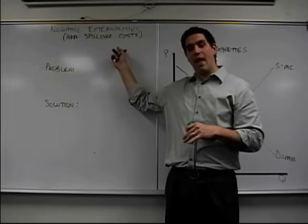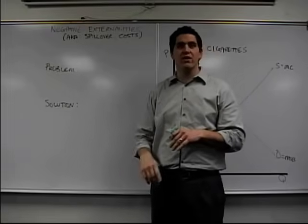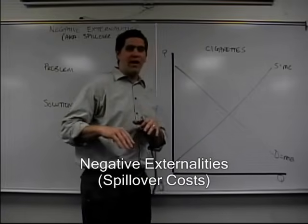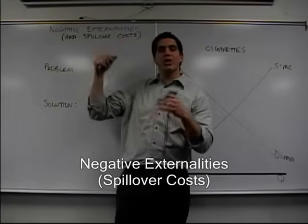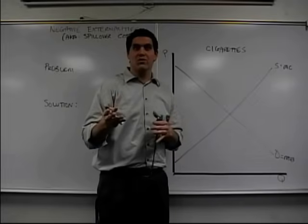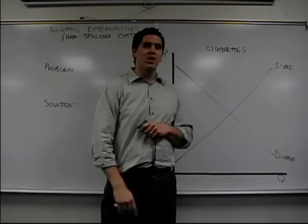Today we're going to talk about market failures and the role of the government. We're talking about externalities, which is one of the four market failures that you're going to find out about. Today we're going to talk about negative externalities, which are also called spillover costs, when costs spill over to someone other than the original producer or the consumer, some other person that wasn't involved with the transaction.